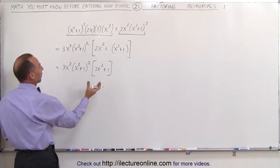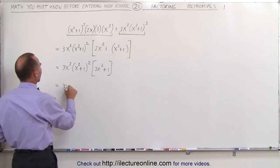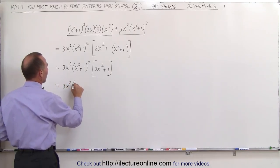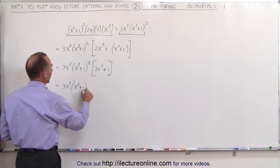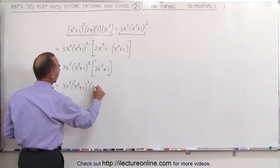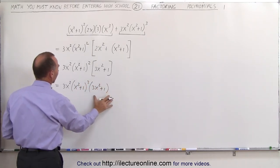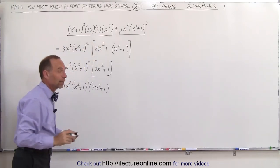And instead of brackets we could write parentheses, so the final answer we could say that this is 3x squared times the quantity x squared plus 1 squared times the quantity 3x squared plus 1. And that's the simplified form of this expression right here.